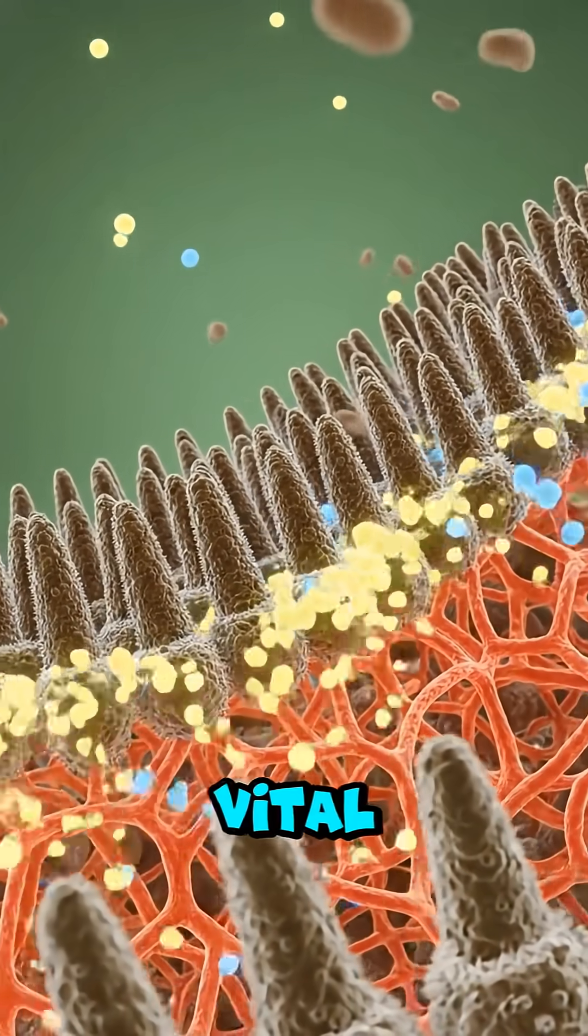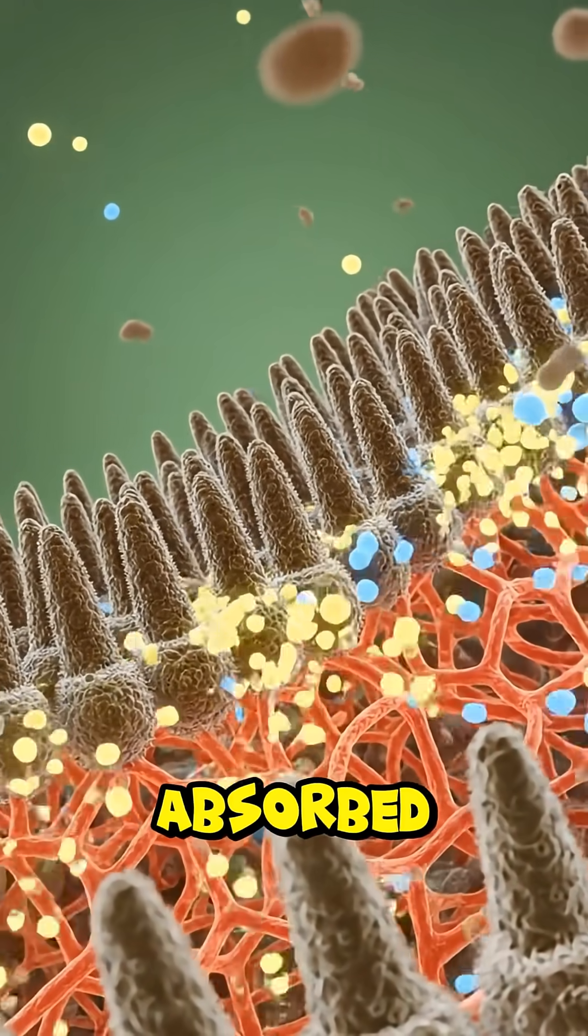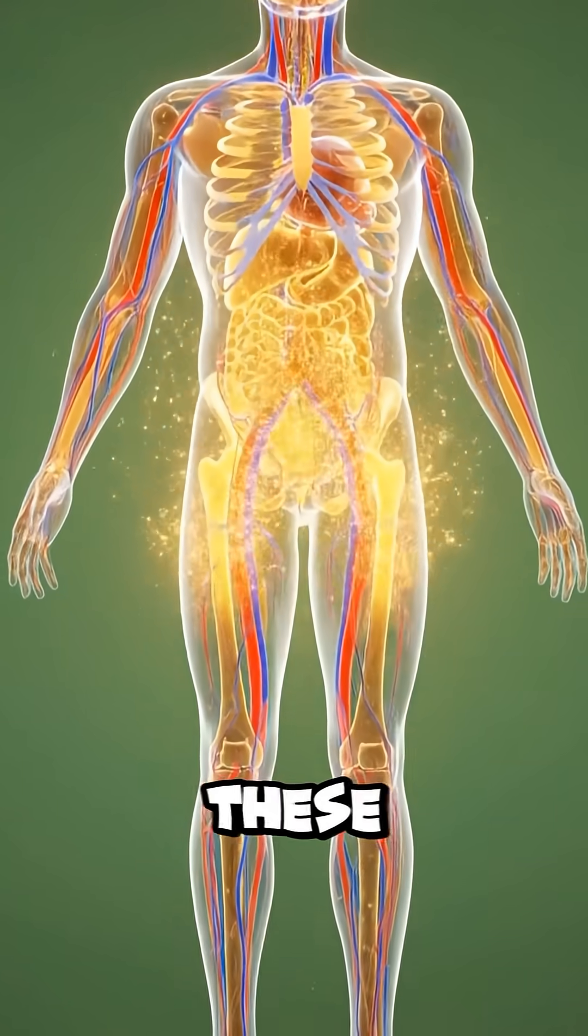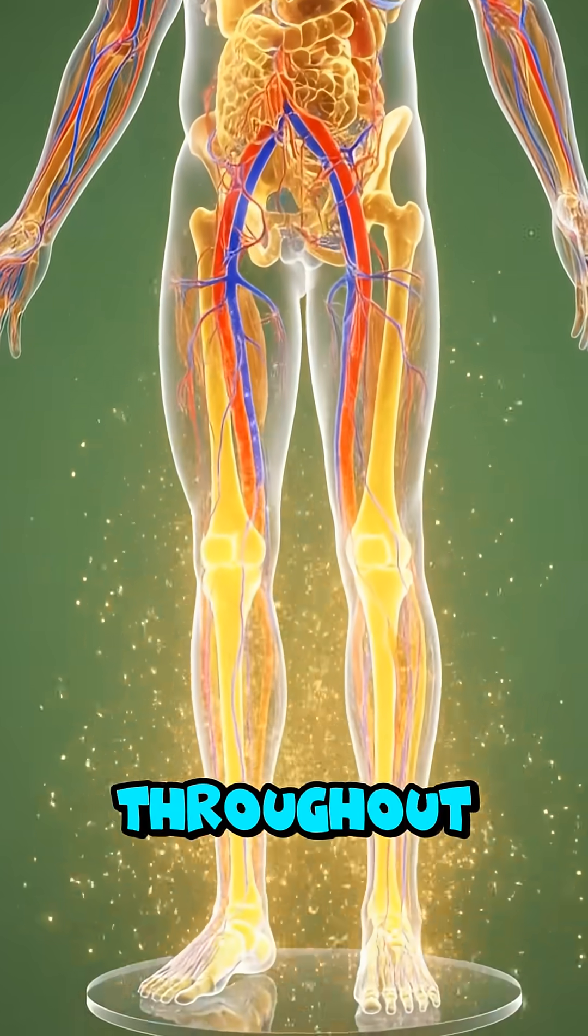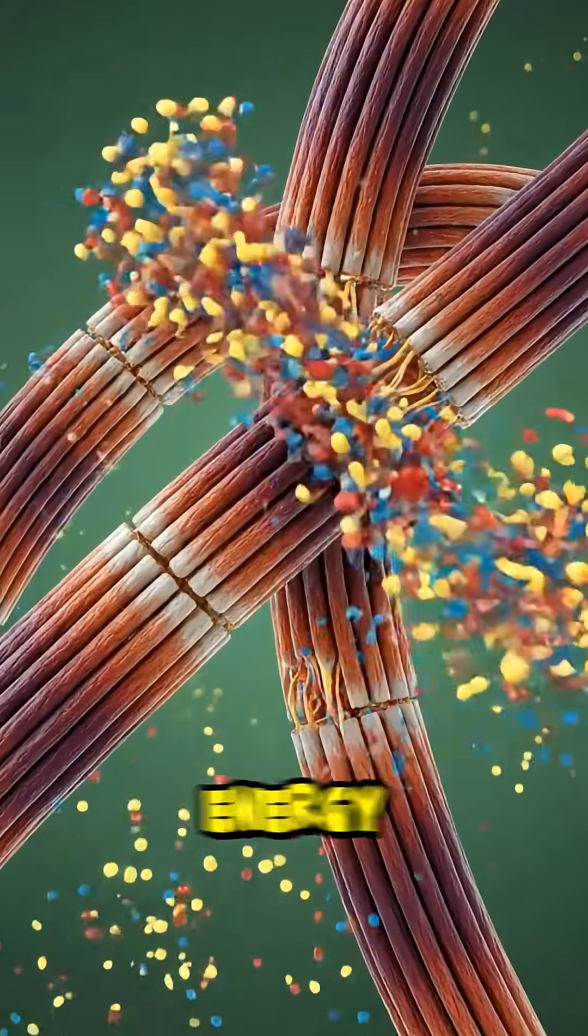Within the small intestine, vital nutrients like proteins and fats are absorbed, crossing into the bloodstream for distribution. These absorbed nutrients then circulate throughout the body, fueling muscles and providing energy to the brain.